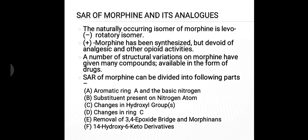Now we talk about the SAR of morphine and its analogs. The naturally occurring isomer of morphine is the levorotatory isomer. Dextrorotatory morphine has been synthesized but it is devoid of analgesic and other opioid receptor activities. A number of structural variations of morphine have given many compounds that are available in the form of drugs.